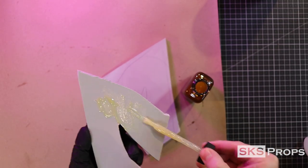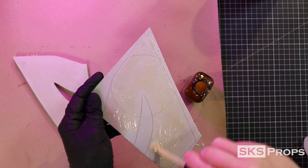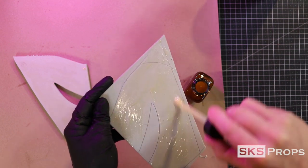Moving on to the handle, I want it to be 20mm thick, so I use some contact cement to adhere two pieces of 10mm HD foam.